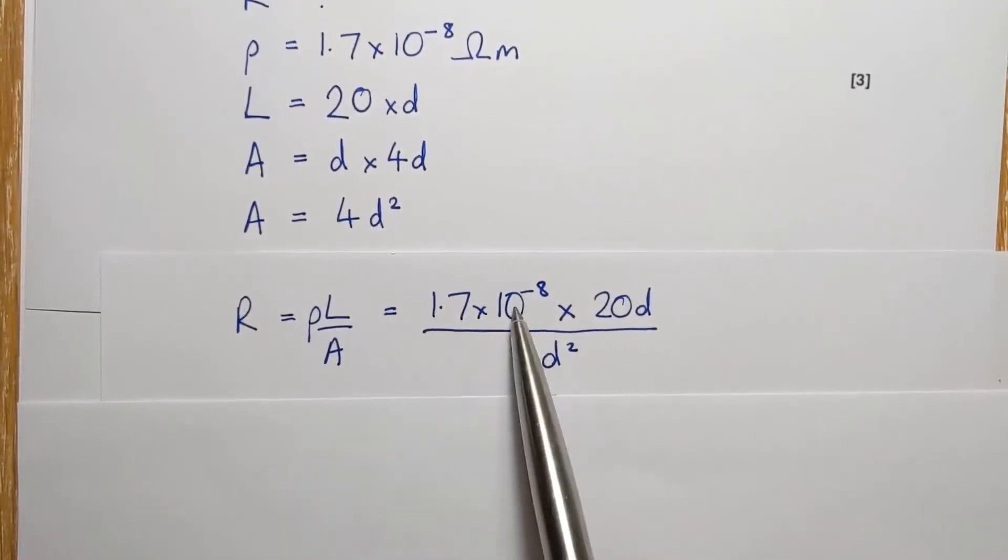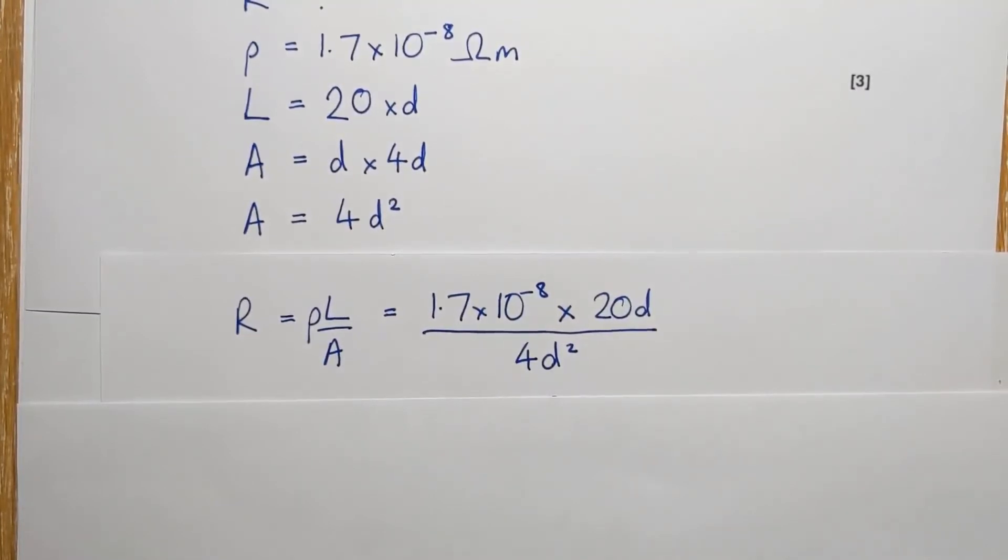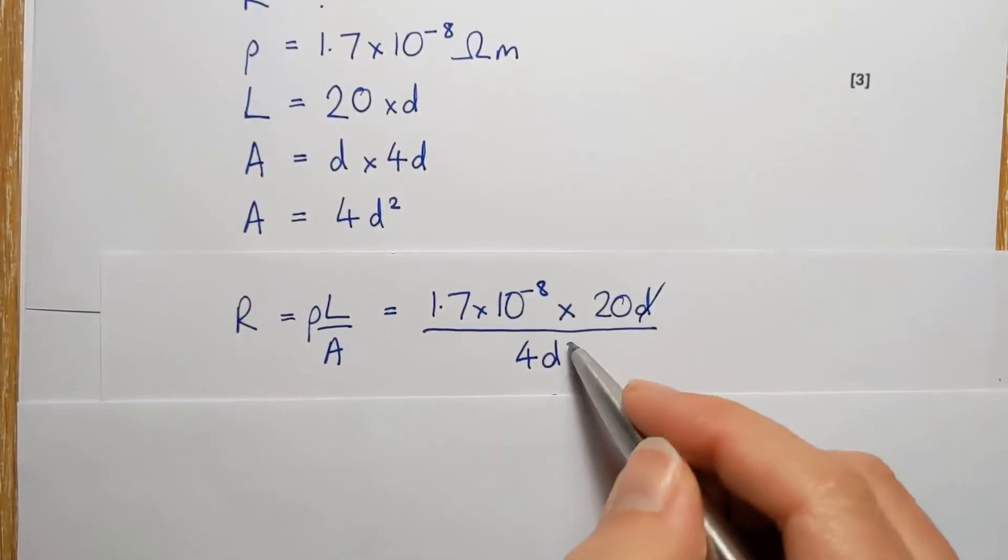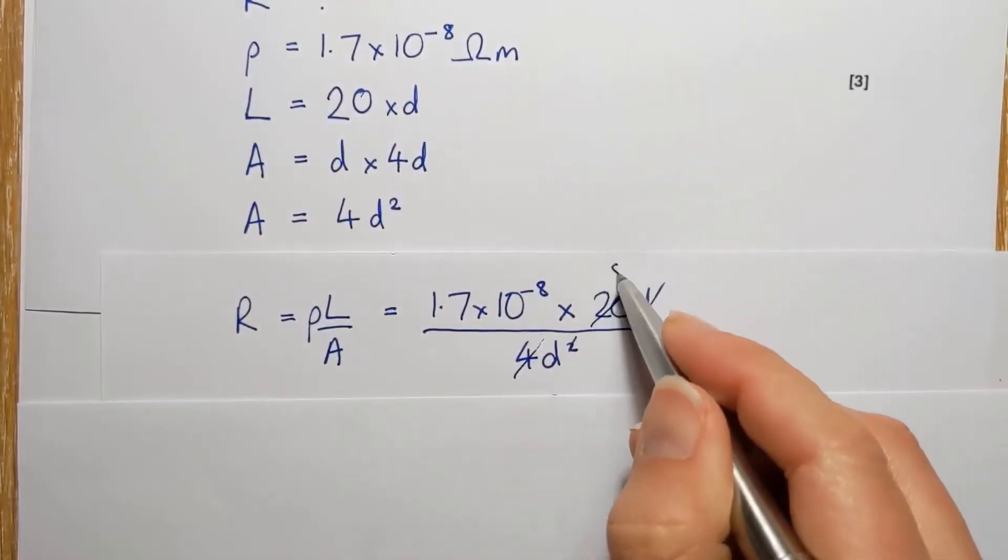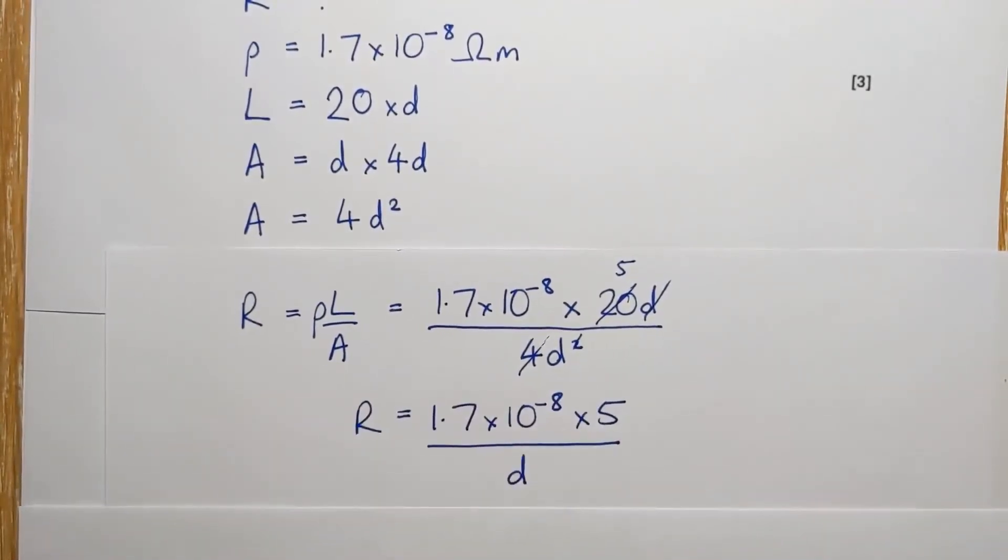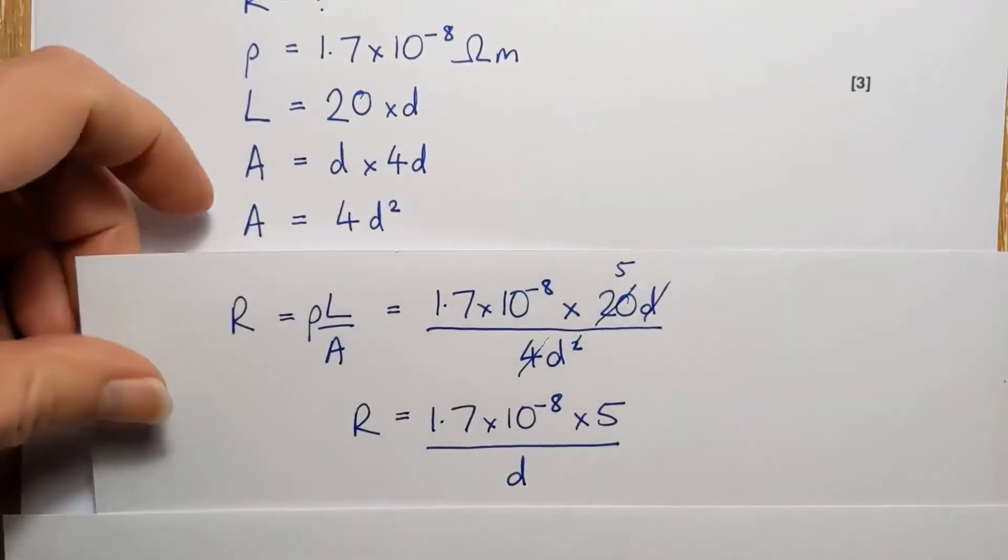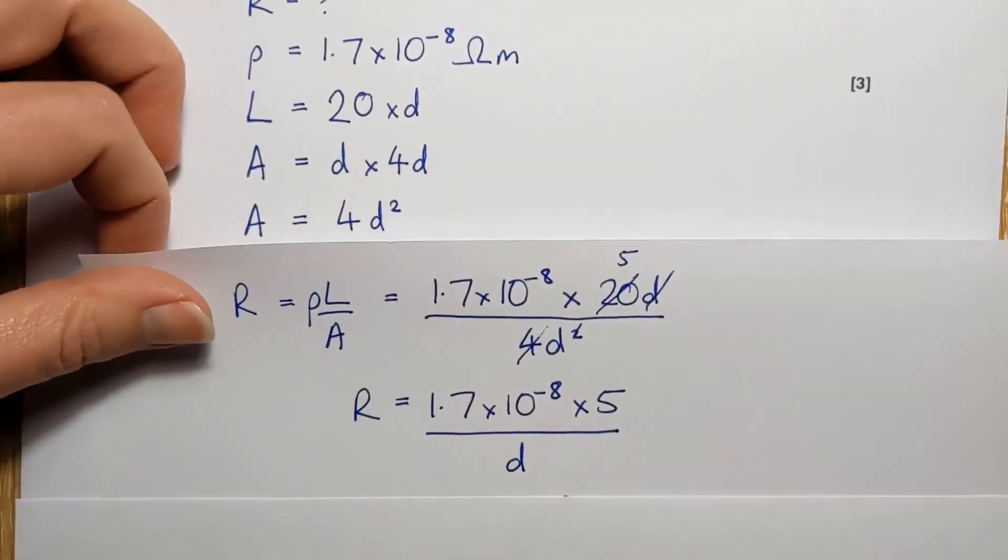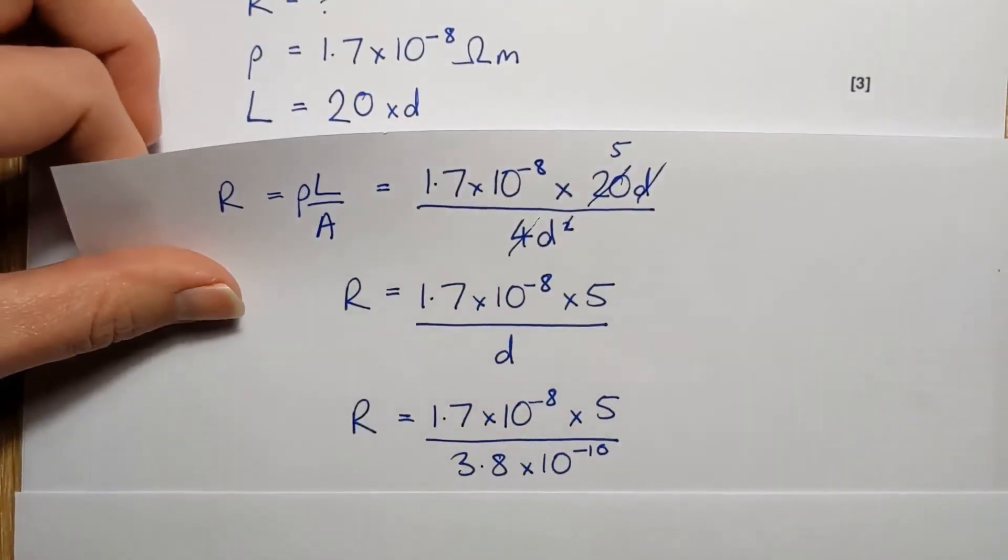So there's the resistivity. 20D is the length. 4D squared is the cross-sectional area. So now you can see that it simplifies a bit. So we can cancel a D from the top and bottom, and then we can cancel 4 from the top and bottom. I'm going to get a 5 there. So now I've got that, which is just a little bit easier to put into the calculator and kind of reduces the chance of you making a calculator error.